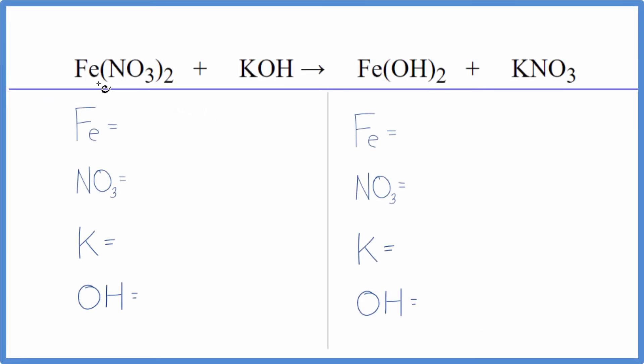In this video, we're going to balance the equation for Fe(NO3)2 plus KOH. This is iron 2. This right here is called the nitrate ion. So this is iron 2 nitrate plus potassium hydroxide.